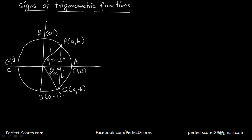Looking at this triangle, we know that cosine of x equals base over hypotenuse, which equals a, and sine of x equals perpendicular over hypotenuse, which equals b. This is something we derived in the previous video.